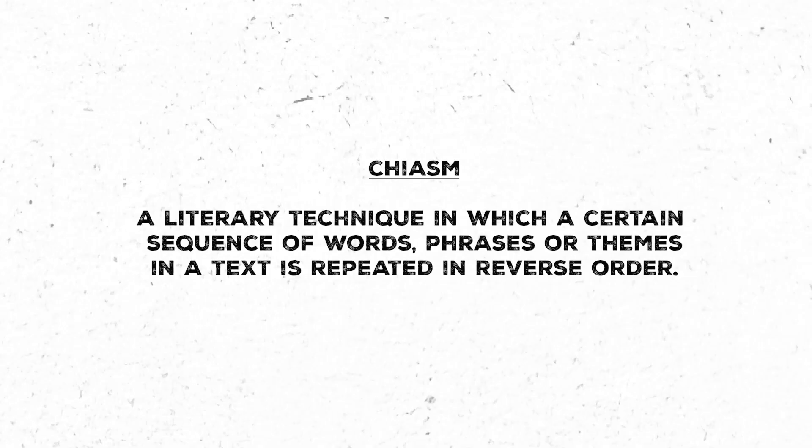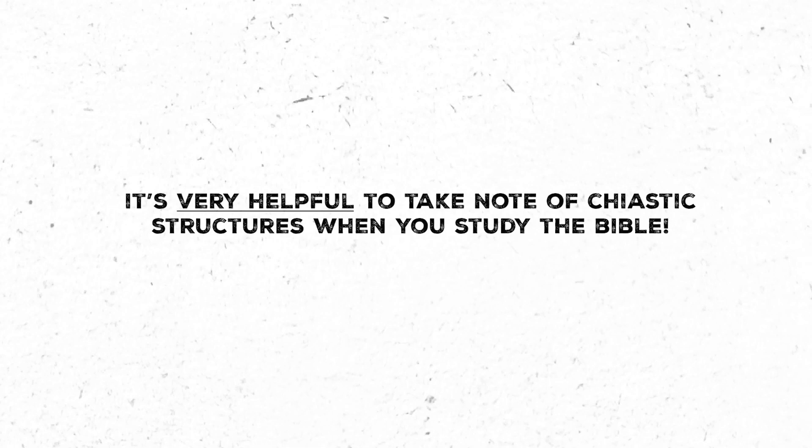Before we get into the different types, let's briefly review what a chiastic structure is. A very basic definition would be that it's a literary technique in which a certain sequence or series of words, phrases, or themes in a text is repeated in reverse order, often around a central element that is not repeated, which the author or speaker wants to highlight in a special way. So really this structure is a way of communication — a way of letting the reader know what's important and what the author is trying to get across, which means it's very helpful to take note of chiastic structures when you're studying the Bible.